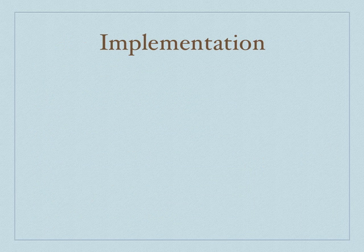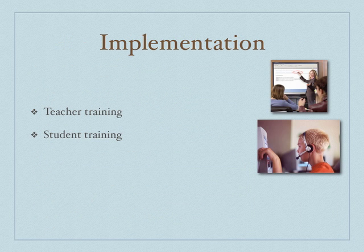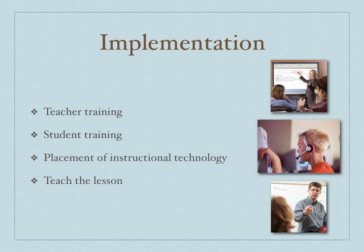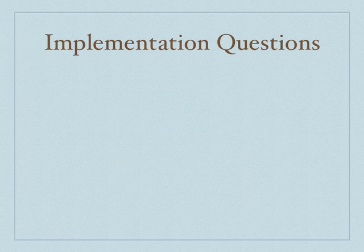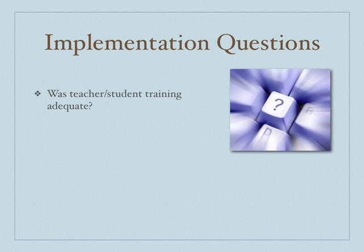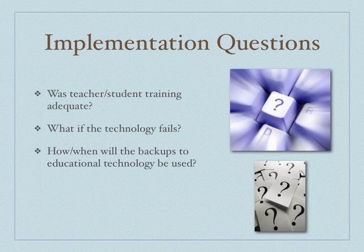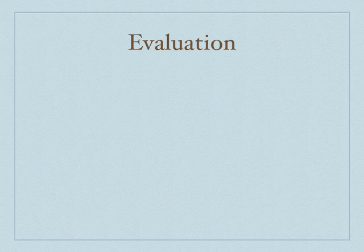Implementation. Some things to consider during implementation: teacher training, student training, placement of instructional technology, and the teaching of the lesson. Questions to ask yourself: was the teacher and student training adequate? What if the technology fails — what do you do? How and when will the backups be used? And do the instructional pieces provide learner accommodations? You need to make sure that if you're using technology in the lesson, both the teacher and the student know how to use the technology.